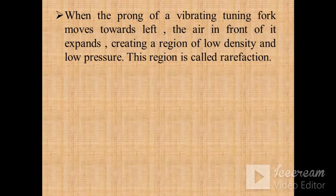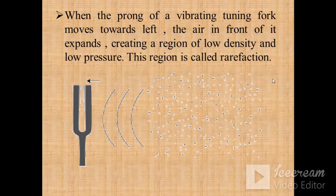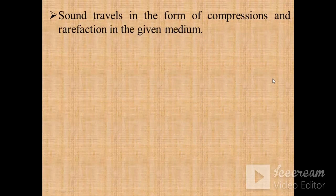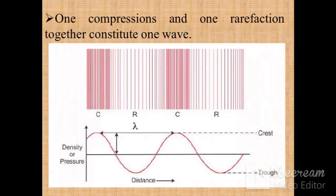When the prong of the vibrating tuning fork moves towards the right, it pushes and compresses the air in front of it, creating a region of high density and high pressure — this region is called compression. When the prong moves towards the left, the air in front expands, creating a region of low density and low pressure — this region is called rarefaction. Sound travels in the form of compressions and rarefactions. One compression and one rarefaction together constitute one wave; the compression is called the crest and the rarefaction is called the trough.